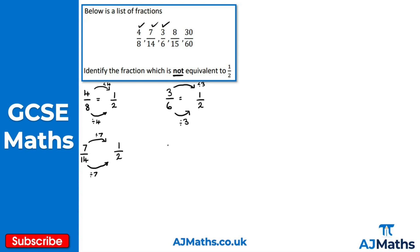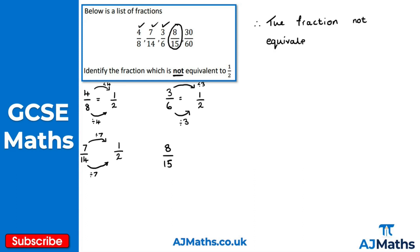For 8 over 15 — we have a bit of an issue here. I can't divide both of these to get 1 over 2. What you might notice with the first three fractions is that the numerator is half the value of the denominator: divide 8 by 2, you get 4; divide 14 by 2, you get 7; divide 6 by 2, you get 3. But if I do the same with 15 and 8 — if I divide 15 by 2, I don't get 8; I get 7.5. So this is the fraction that is not equivalent to 1 over 2. Therefore, the fraction not equivalent to 1 over 2 is 8 over 15.